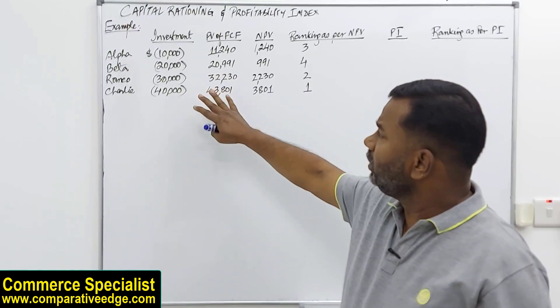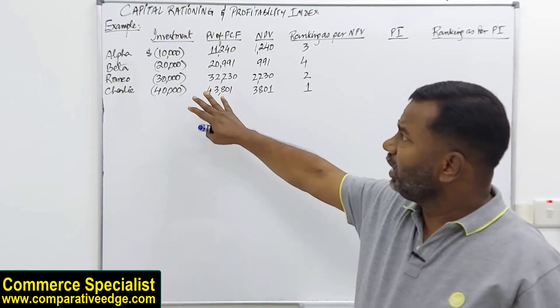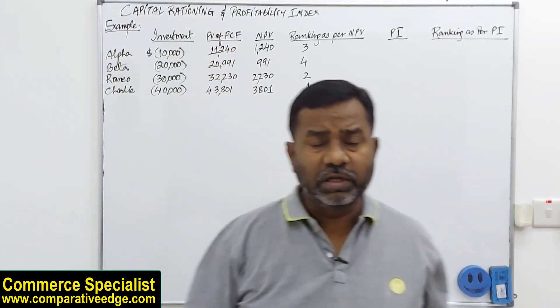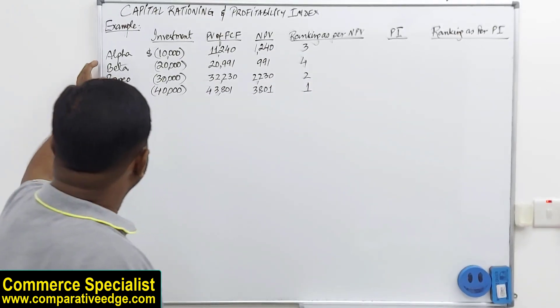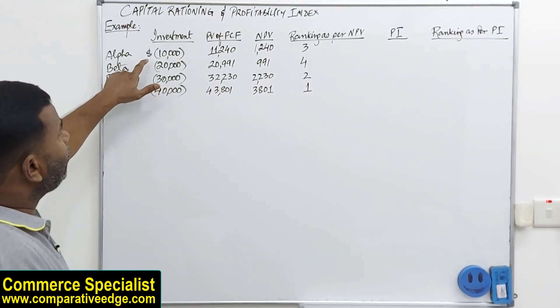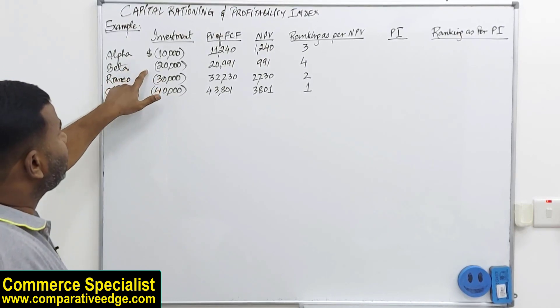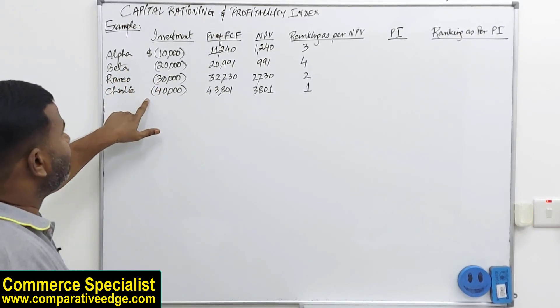So here I have an example where this company has 4 available projects. These projects are Alpha, Beta, Romeo, and Charlie. This is the investment required: 10,000 for Alpha, 20,000 dollars for Beta, 30 and 40,000 for Charlie.